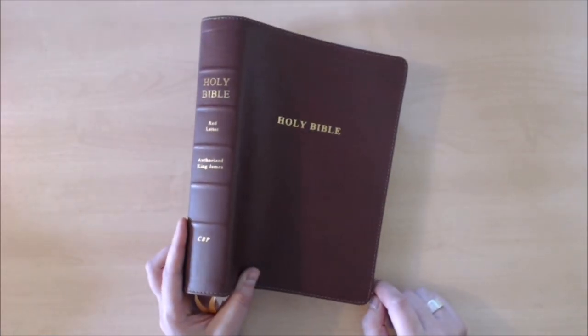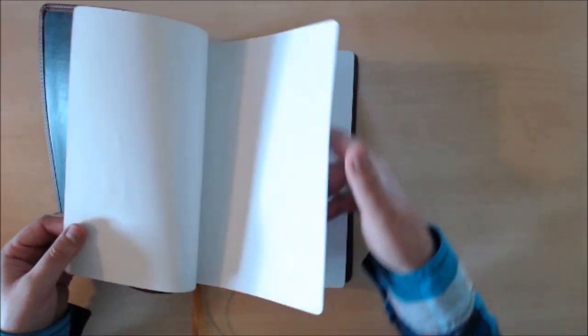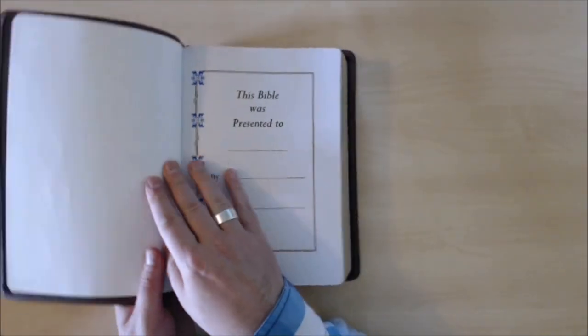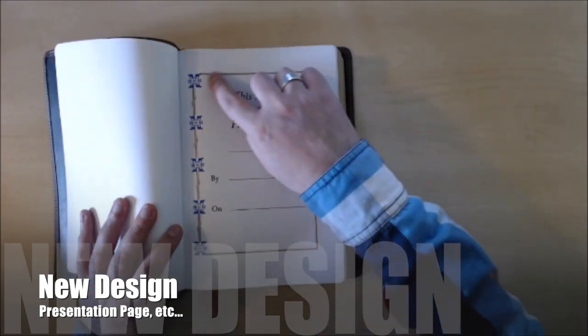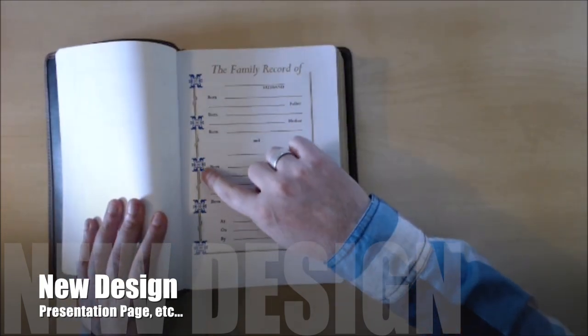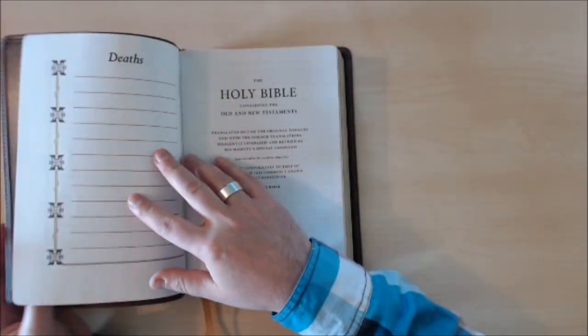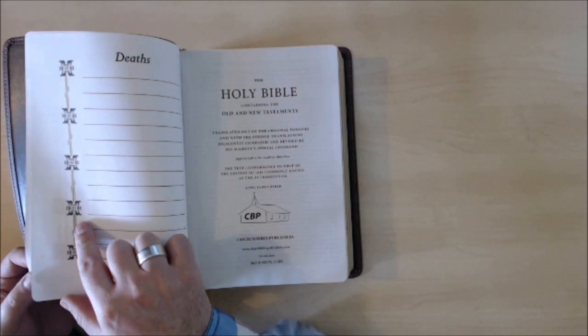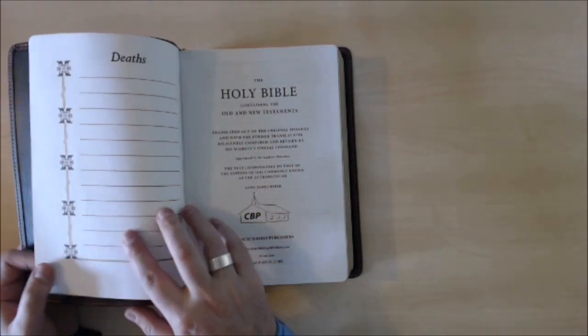This Bible comes with one, two, three, four and five blank pages of cardstock for notes, extra notes. Comes with this brand new cardstock design presentation page, family record with a lovely gold and navy blue design.